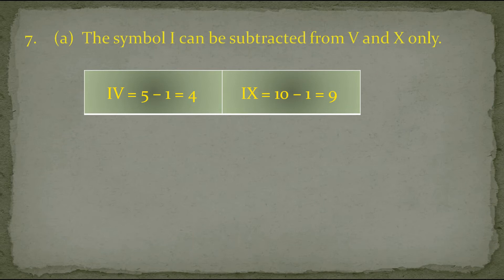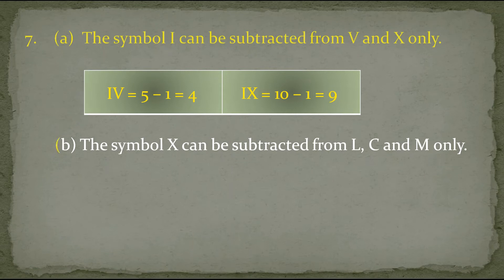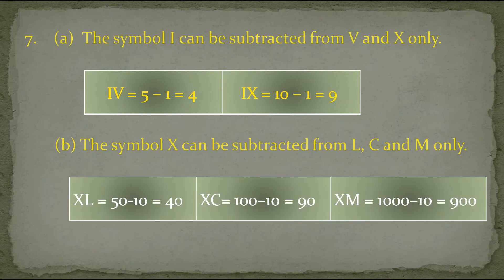And one more rule related to this: the symbol X can be subtracted from L, C and M only. Just as I can only be subtracted from V and X, X can be subtracted only from L, C and M. So there are only three possibilities: XL equals 50 minus 10 which equals 40; XC equals 100 minus 10 which equals 90; and XM equals 1000 minus 10 which equals 990.